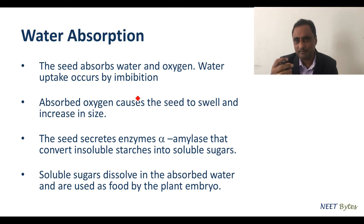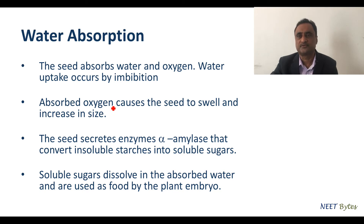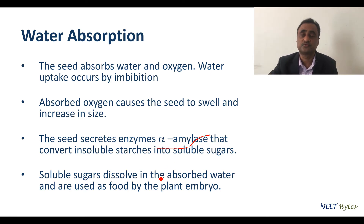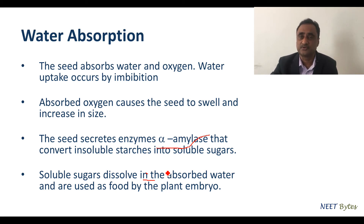In water absorption, water is imbibed. As a result of imbibition of water, water hydrolyzes the cotyledons and forms an enzyme called alpha-amylase. That enzyme is responsible for breaking down the cotyledons into soluble sugars, and those soluble sugars go to the growing axis. With the help of those soluble sugars, further development occurs in terms of the emergence of the radicle.